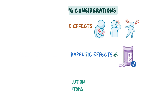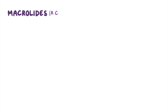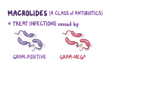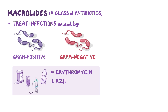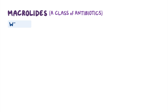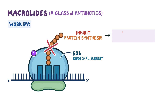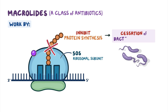As a quick recap, macrolides are a class of antibiotics that treat infections caused by gram-positive and gram-negative bacteria, and include erythromycin, azithromycin, and clarithromycin. These medications work by targeting the bacterial 50S ribosomal subunit in order to inhibit protein synthesis and ultimately stop bacterial growth.